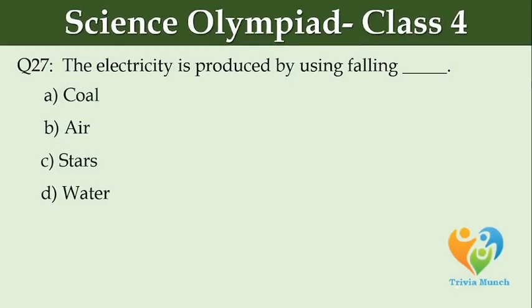The electricity is produced by using falling dash. Option A: Coal, Option B: Air, Option C: Stars, Option D: Water.